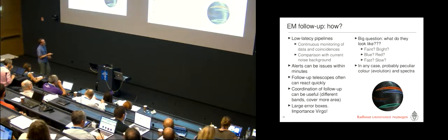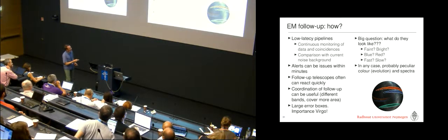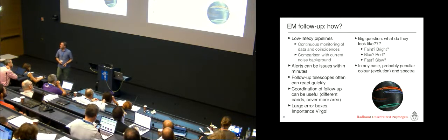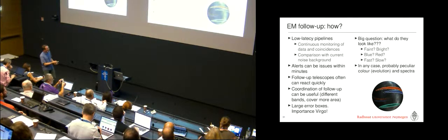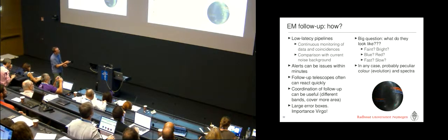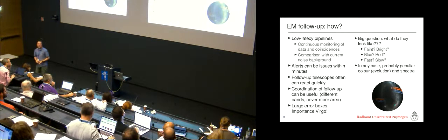So you dump a lot of energy and the question is and the thing is expanding when does the radiation get out early when it's still small and hot and blue or late when it's red and less hot. And so I just want to show why it's so important to have Virgo online. These are the error boxes with the LIGO detectors and if I switch to this one you see how it would have been with Virgo and especially here if you look at GW150914 it really would help to have a third detector.